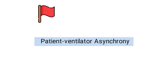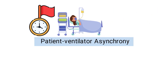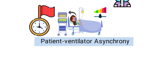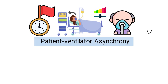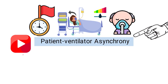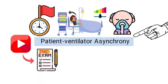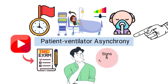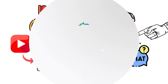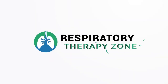Patient-ventilator asynchrony is characterized by inappropriate timing of a delivered breath between a patient and the mechanical ventilator. This increases their work of breathing and makes it more difficult for the patient to breathe comfortably on the machine. This is a topic you must be familiar with, which is why in this video we're going to break down a sample TMC practice question that requires you to interpret the patient's signs and symptoms. So if you're ready, let's get into the question.